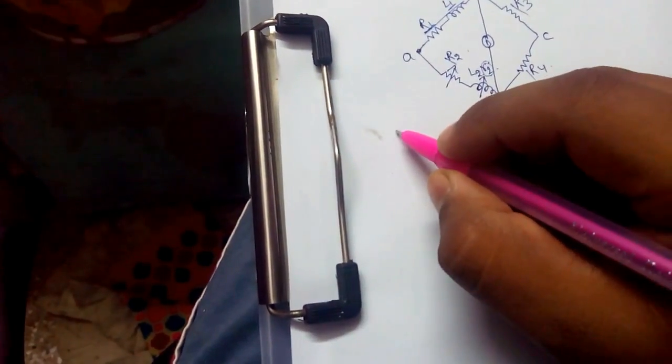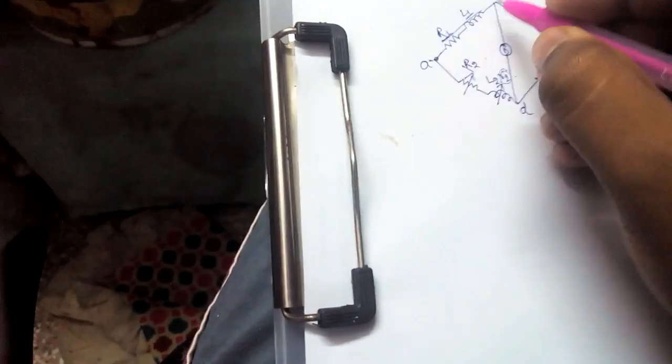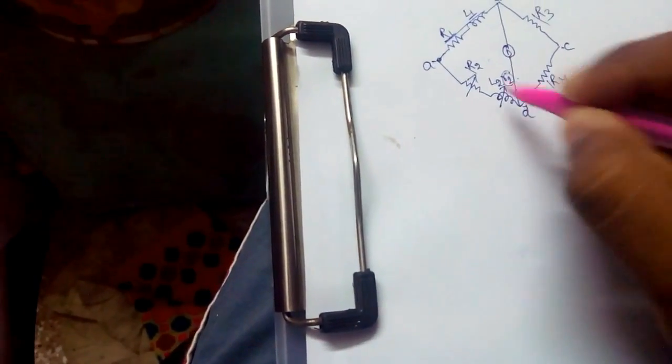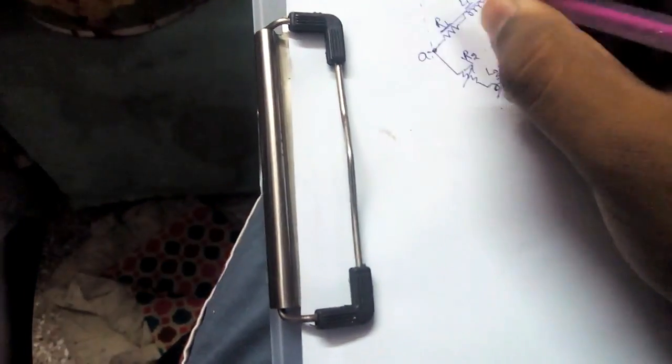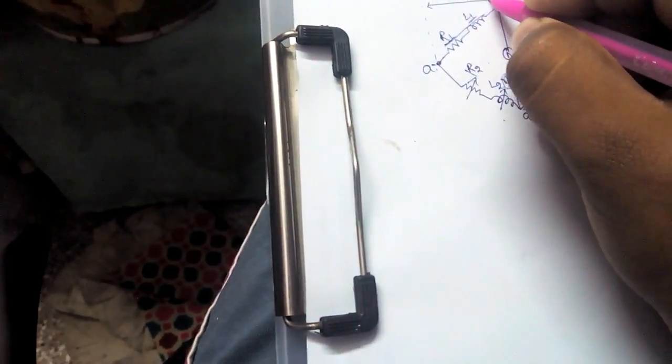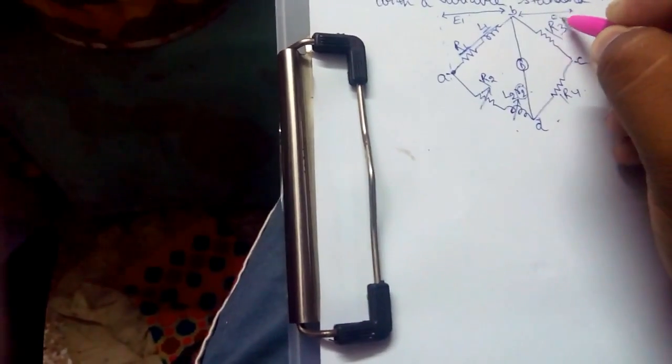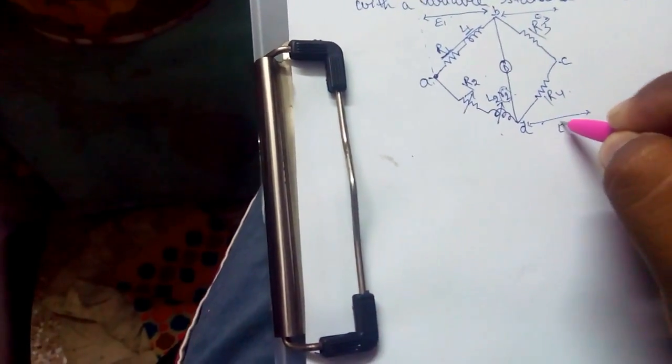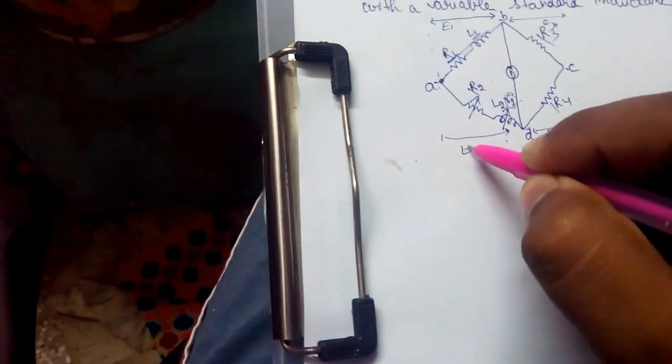Now let's find the impedances of each arm, that is AB, BC, CD, and DA. Firstly, the voltage flow between AB would be E1. Similarly, BC would be E3, DC would be E4, and AD would be E2.